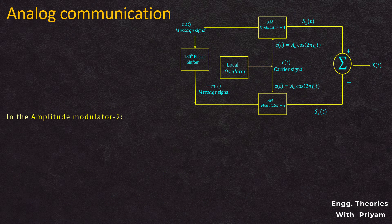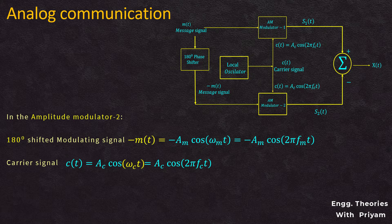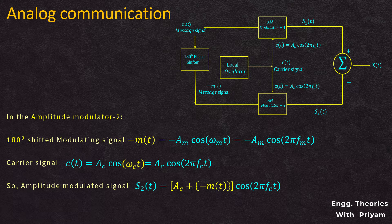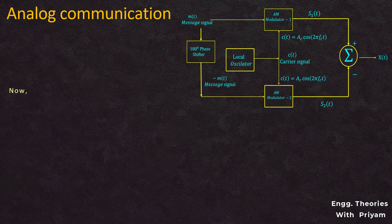For Modulator 2, the modulating signal is −m(t), which equals −Am·cos(2π·fm·t), and the carrier signal c(t) = Ac·cos(2π·fc·t). So the amplitude modulated signal s2(t) = [Ac + (−m(t))]·cos(2π·fc·t), which simplifies to s2(t) = Ac·[1 − k·m(t)]·cos(2π·fc·t). This is identified as Equation 2.